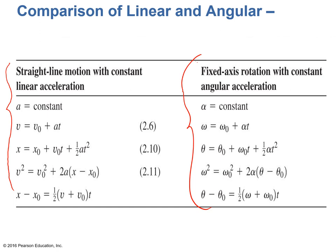They're the same. The only difference is a for acceleration in linear motion is alpha for angular acceleration in rotational motion. V for velocity in linear motion is omega for angular velocity in rotational motion.